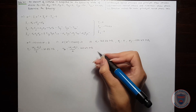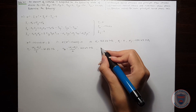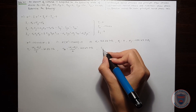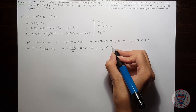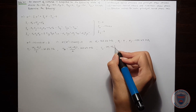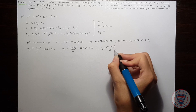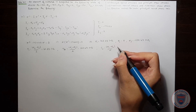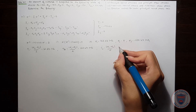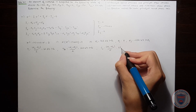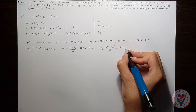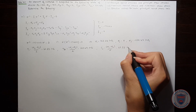And finally, tau_3 will be equal to (sigma_1 minus sigma_2) over 2, and it is equal to 61.23 MPa.